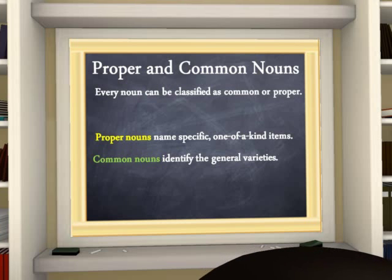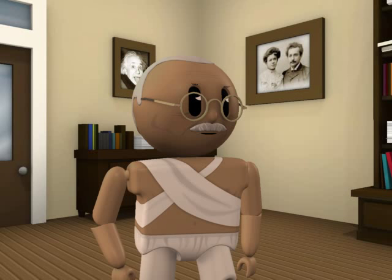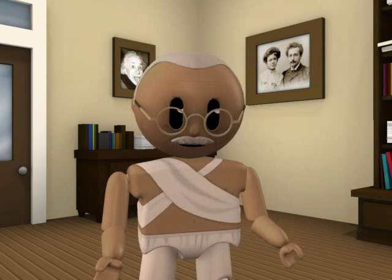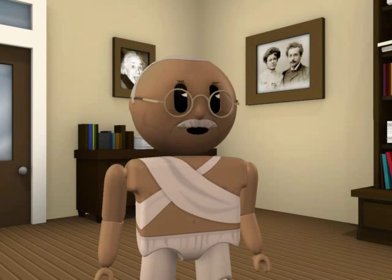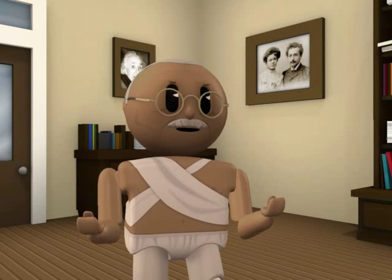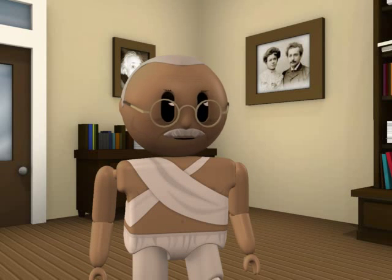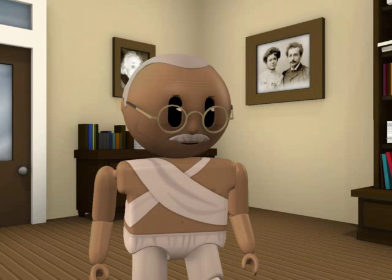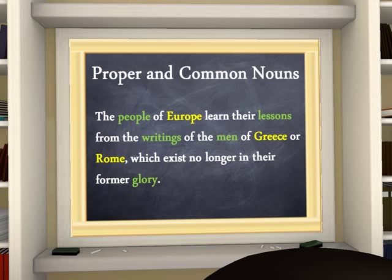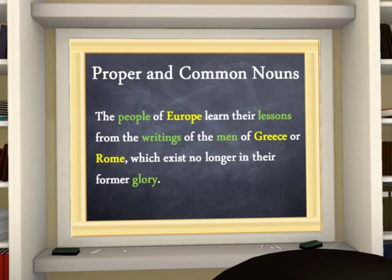Recognize a common noun when you see one. Common nouns are general names for things. Some examples include book, bus, cookie, mess, and clothes. Common nouns are never capitalized unless they begin a sentence or are part of a title. Here is a sample sentence where we can identify proper and common nouns: "The people of Europe learn their lessons from the writings of the men of Greece or Rome, which exist no longer in their former glory." We have eight nouns in this sentence — the yellow ones are proper, and the others are common.